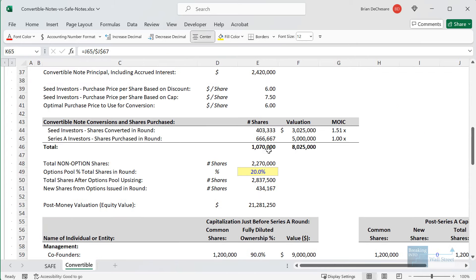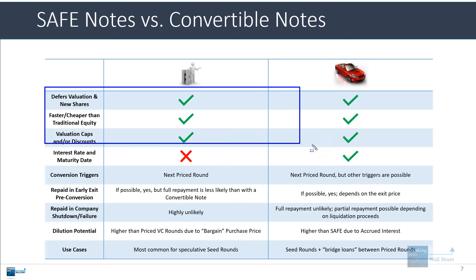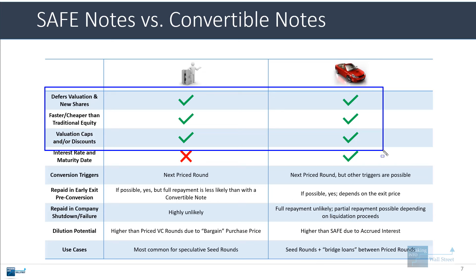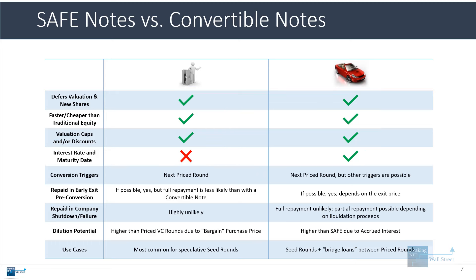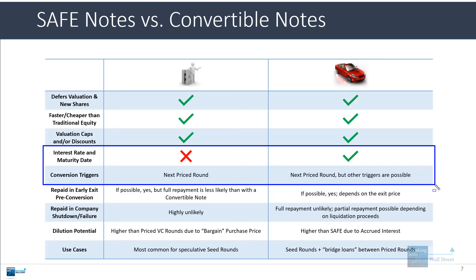That is the basic difference. Now, if we make a comparison table in PowerPoint, a lot of the features are the same. With both convertible notes and safe notes, you defer the valuation, new shares are not initially granted, they are both faster and cheaper than traditional equity, and you could have a valuation cap, a valuation discount, or both on both of these. Where it starts to differ is at the bottom of the table, because you don't have interest rates or maturity date with safe notes, but you do with convertible notes. The conversion triggers are also a little bit different — a priced round could trigger a conversion for convertible notes, but other triggers are also possible.